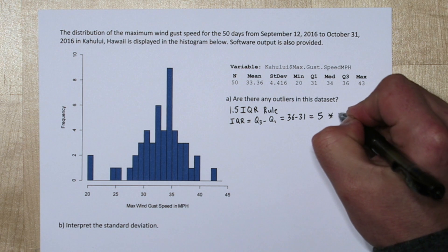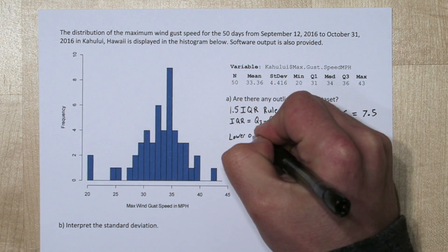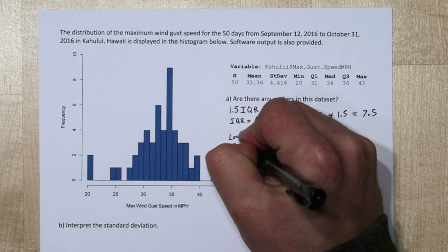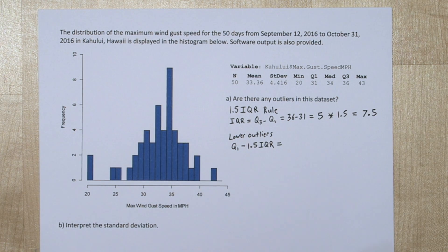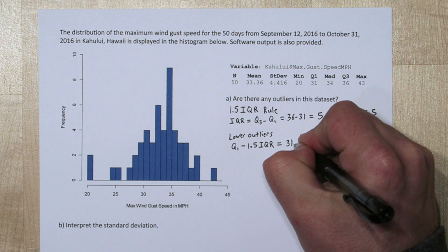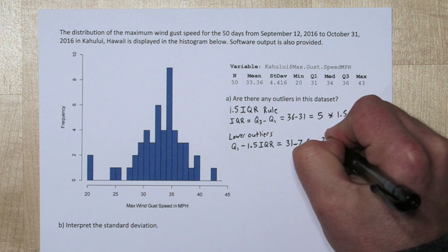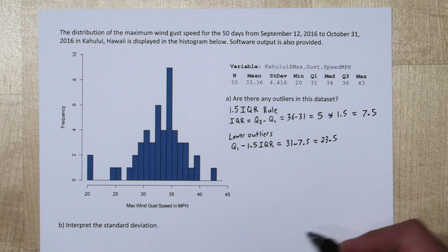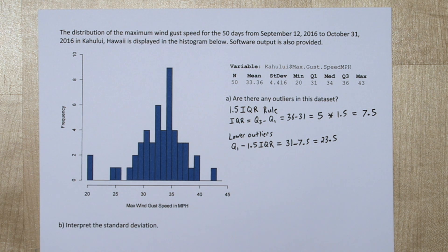Now if we multiply that times 1.5, we get 1.5 IQR, which happens to be 7.5. Any value that's more than 1.5 IQRs lower than quartile 1, we call a lower outlier. So in this case, quartile 1 is 31. We'll subtract our 1.5 IQR, and we get the cutoff value of 23.5. Looking at our data, it looks like there's two maximum wind gusts that were lower than 23.5. So we have two lower outliers.